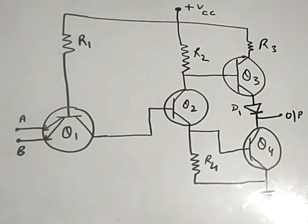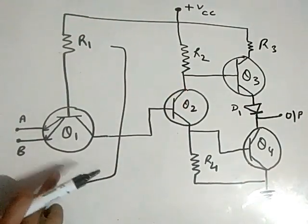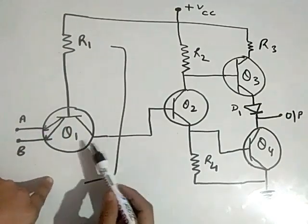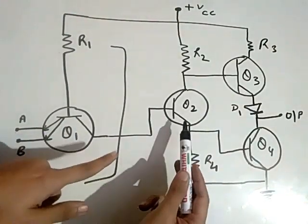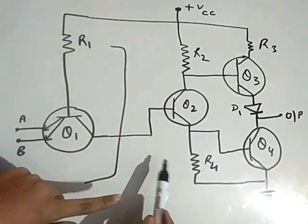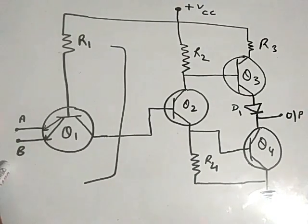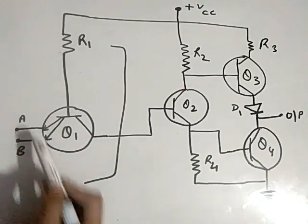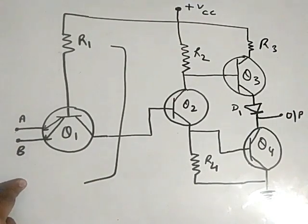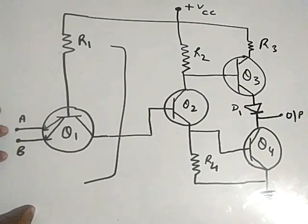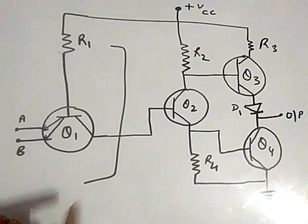This part of the circuit works like a NAND gate. The output of Q1 from the collector side converts Q2 as an inverter, so it works like a NAND gate. A and B are given as inputs — these are the emitters that show the input. We can use up to 8 emitters because it is a NAND gate.